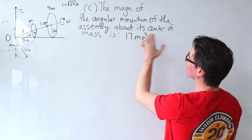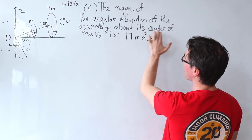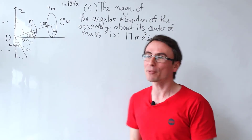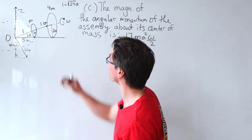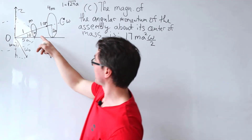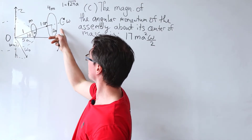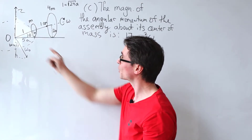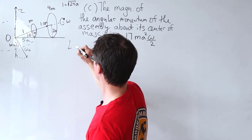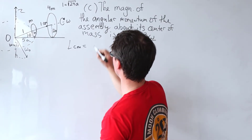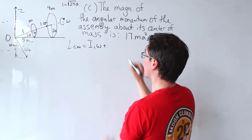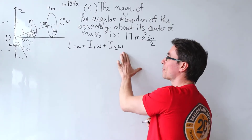On to part C: the magnitude of the angular momentum of the assembly about its center of mass is 17ma²ω/2. In the frame of the center of mass, we only consider the spin angular momentum: L_cm = I₁·ω + I₂·ω. We don't need to consider the connecting cylinder because the question states it's massless.